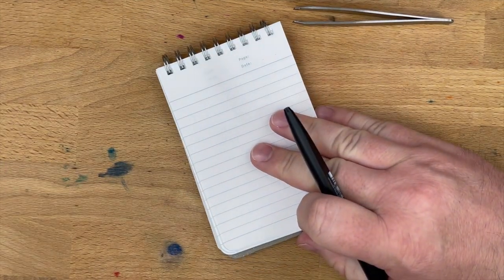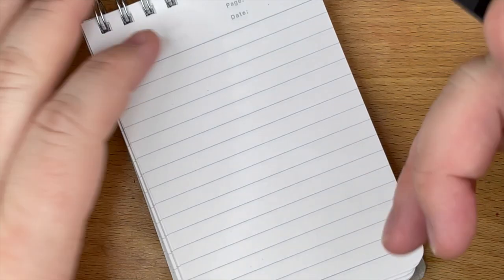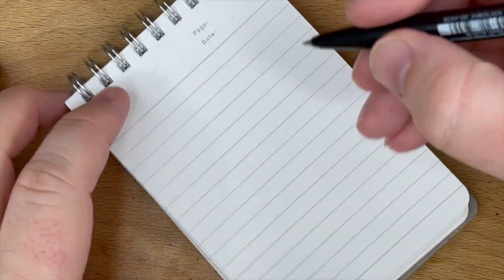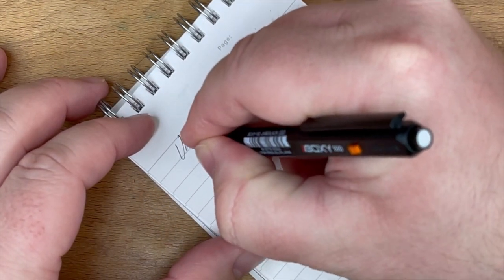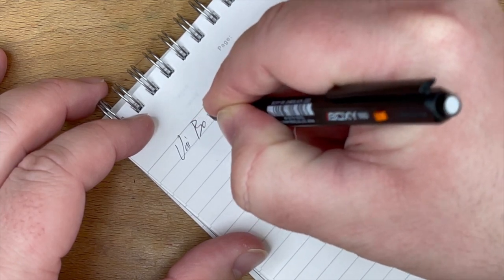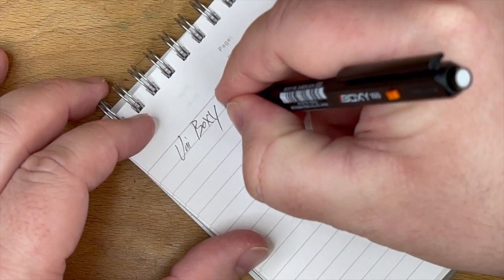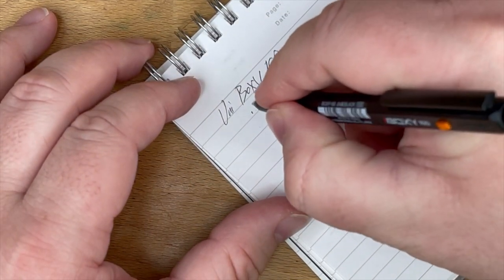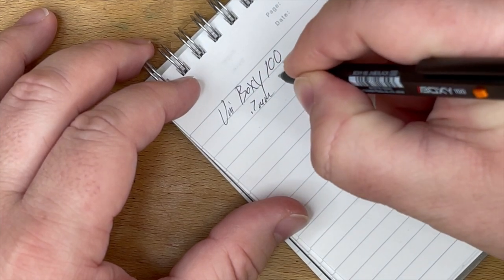All right, so let's see how this writes. The answer is that it writes pretty okay. Okay, this is the Uni Boxy 100, 0.7 millimeter ballpoint.